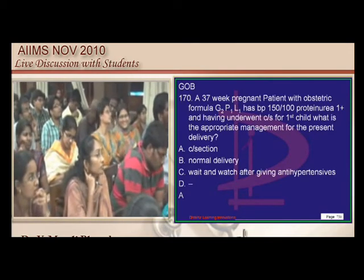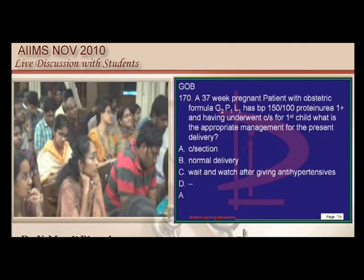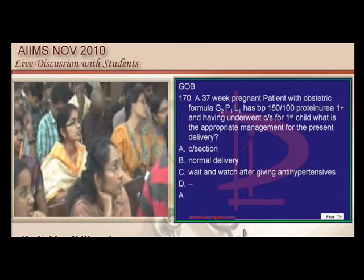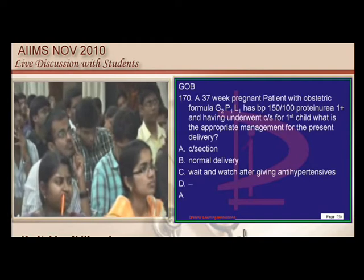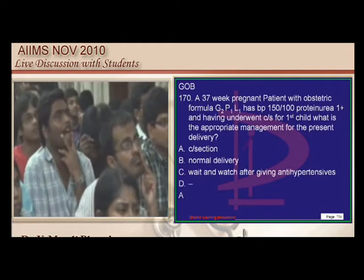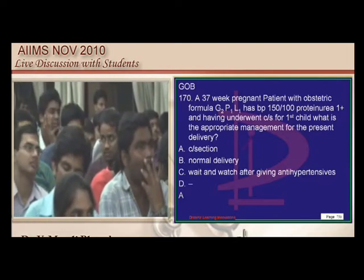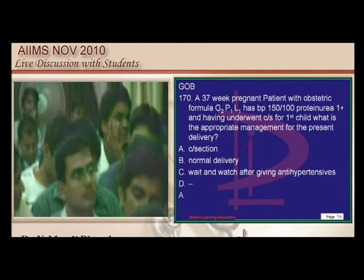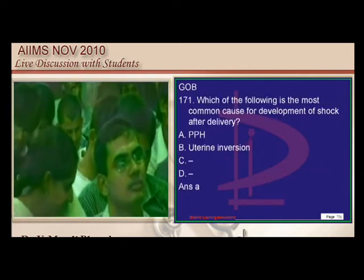A G2P1L1 patient at 37 weeks with high BP, proteinuria, and a previous cesarean section: a trial of labor (VBAC) is only done if there are no other risk factors. Because she already has proteinuria and pre-eclampsia and has reached 37 weeks, we proceed with cesarean section.